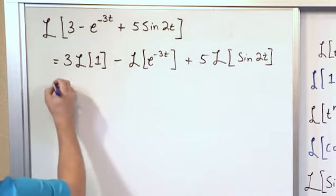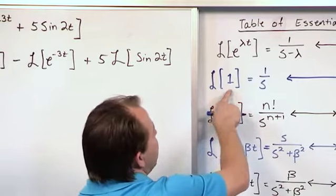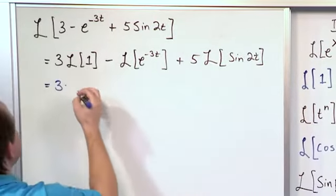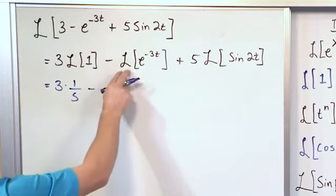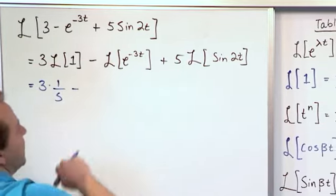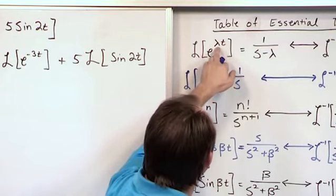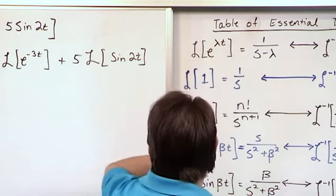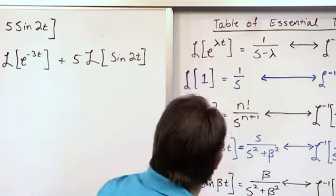3 times the Laplace Transform of 1 is just 1 over s, you'll end up memorizing that after a while. We have a minus sign. Laplace Transform e to the minus 3t fits with this mold but the only difference is lambda at the top is negative 3.